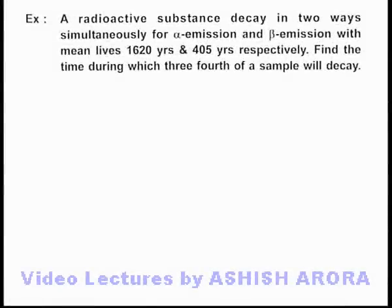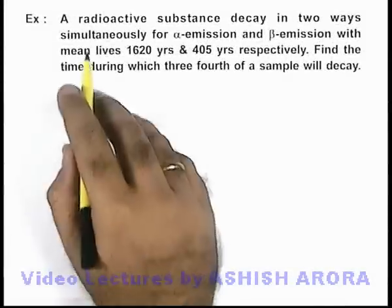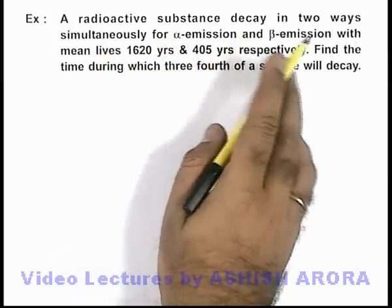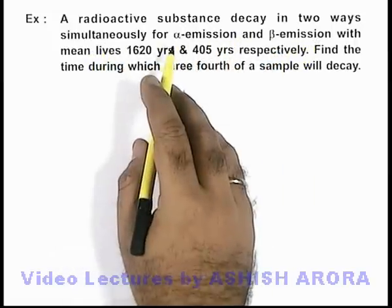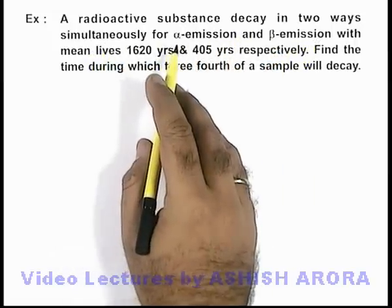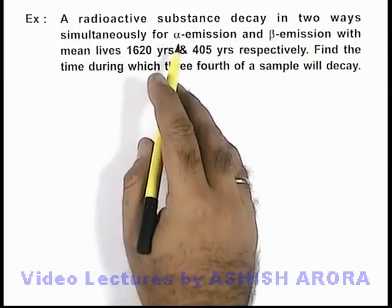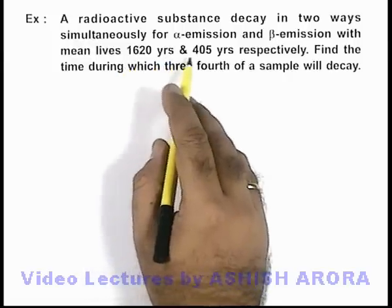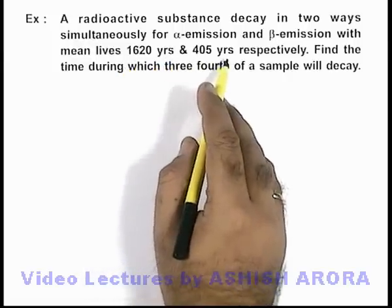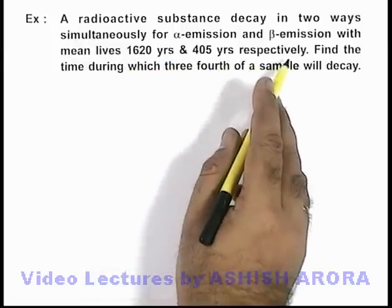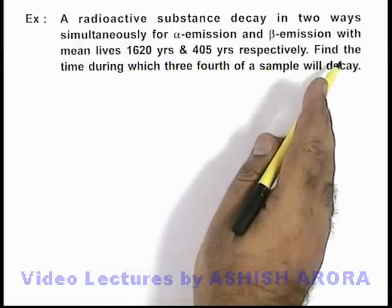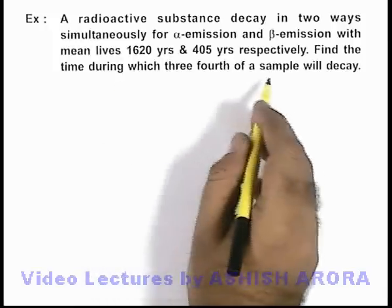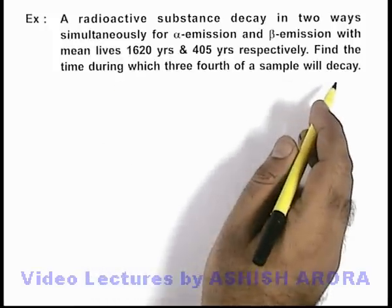In this example, we are given that a radioactive substance decays in 2 ways simultaneously — alpha emission and beta emission — with mean lives of 1620 years and 405 years respectively. We are required to find the time during which 3/4 of the sample will decay.